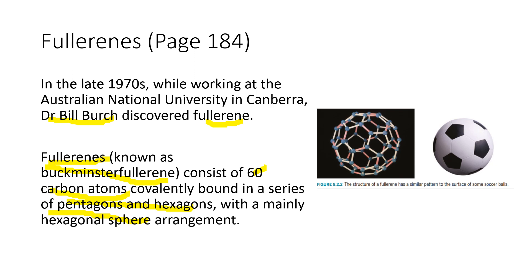Fullerene consists of five and six carbon rings. If it is a pentagon, it consists of a five carbon ring. If it is a hexagon, it consists of a six carbon ring. You can see that on this particular diagram — if you count one, two, three, four, five, six, it is the hexagon structure; if it is one, two, three, four, five, it is the pentagon structure.